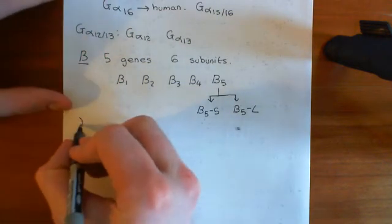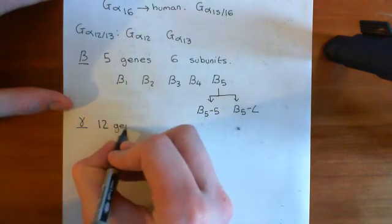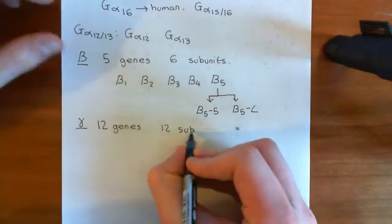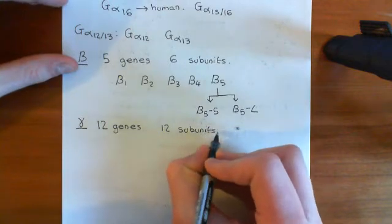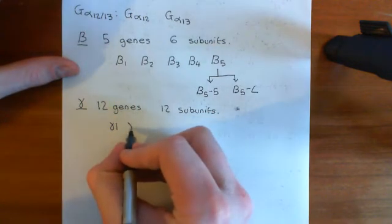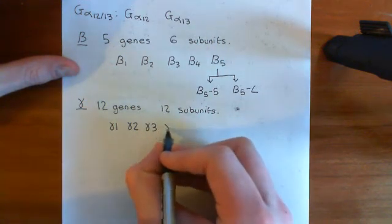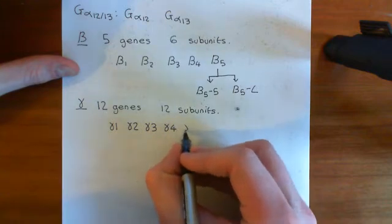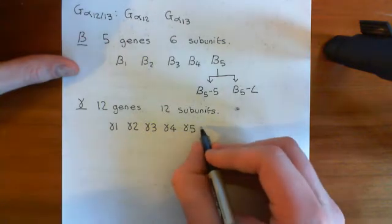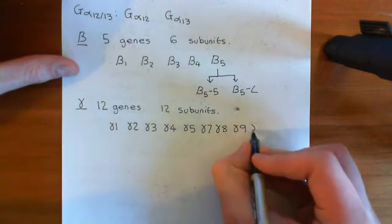Now let's go to the gamma subunits. For the gamma subunit, there are 12 different genes for gamma subunits, and there are 12 different subunits. So this is nice and simple, and it has quite a nice simple naming system as well, with one little blip in its naming. Basically you have gamma 1 through gamma 5, but then there's no gamma 6 — this is the little blip in the naming system. You go up to gamma 7, and then it continues all the way to gamma 13 with no more blips.